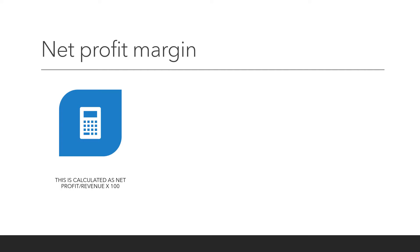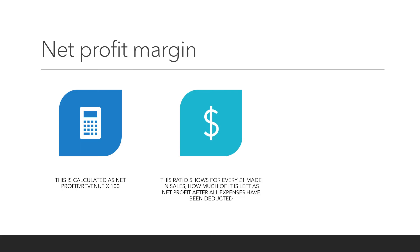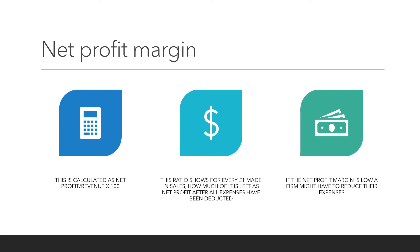Net profit margin. This is calculated as net profit divided by revenue, times by 100. This ratio shows that for every one pound made in sales, how much of it is left as net profit after all the expenses have been deducted. If the net profit margin is low, a firm may have to reduce their expenses.